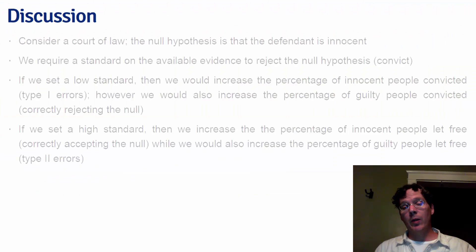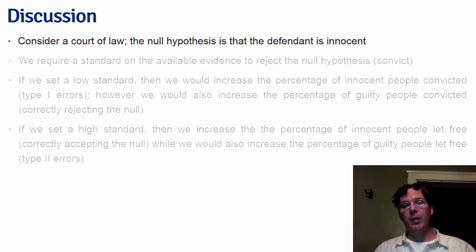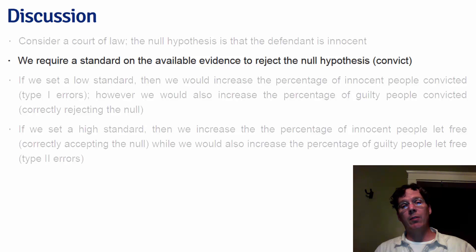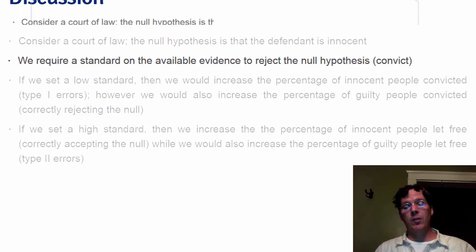The Type I error rate and Type II error rate are related in the sense that as the Type I error rate increases, the Type II error rate decreases and vice versa. We can illustrate this by considering a court of law. In most courts, the null hypothesis is that the defendant is innocent until proven guilty, and rejecting the null hypothesis means convicting the defendant.